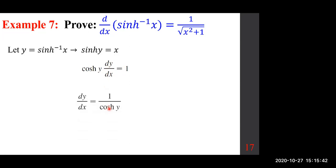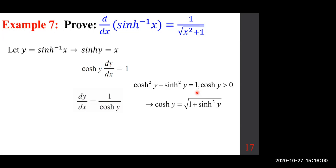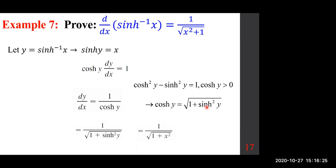We're practically done — we just need to figure out cosh(y). Recall that cosh²(y) − sinh²(y) = 1. So cosh(y) = √(1 + sinh²(y)). Since sinh(y) = x, we replace sinh(y) with x, giving cosh(y) = √(1 + x²). Therefore dy/dx = 1/√(x² + 1). I highly recommend going over the proofs of inverse trigonometric derivatives to see the parallel.